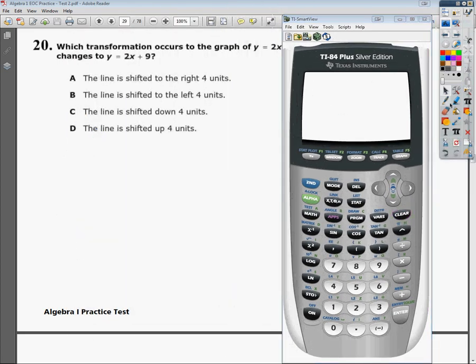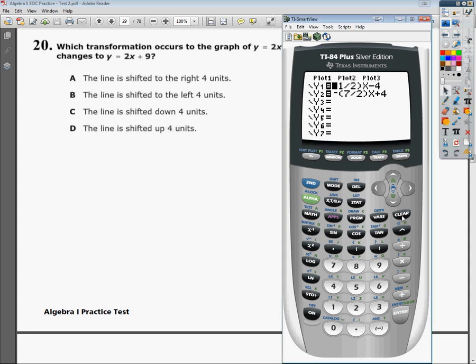So if I clear those out, let me clear this off. I'm going to go to y equals, I'm going to type in 2x. Let's see if I can clear all this out first. Okay, y equals 2x plus 5. And then I'm going to click down and type in y equals 2x plus 9.